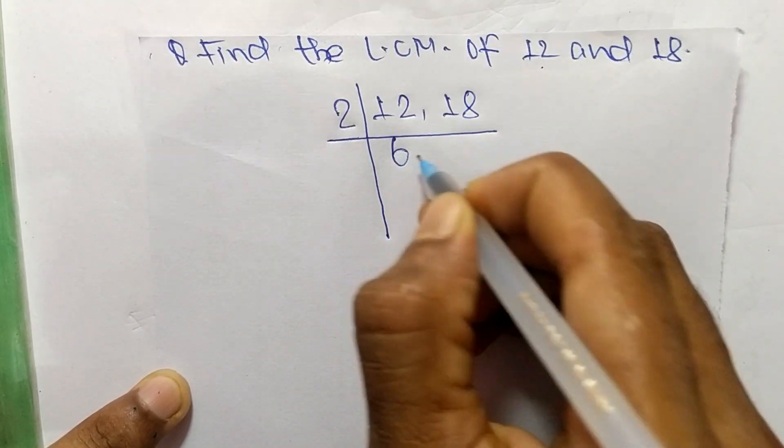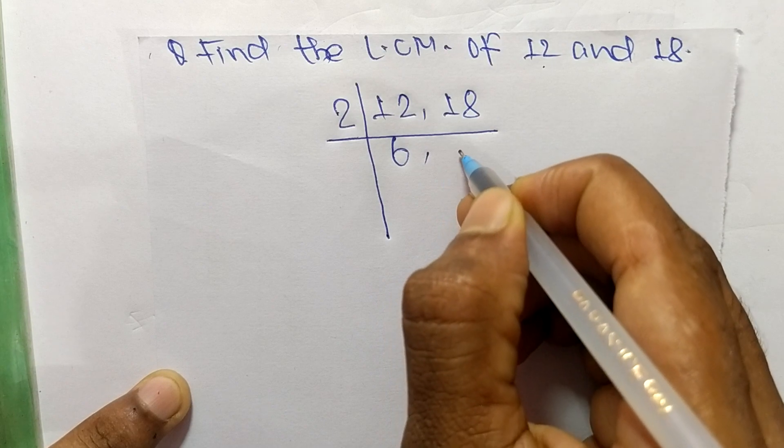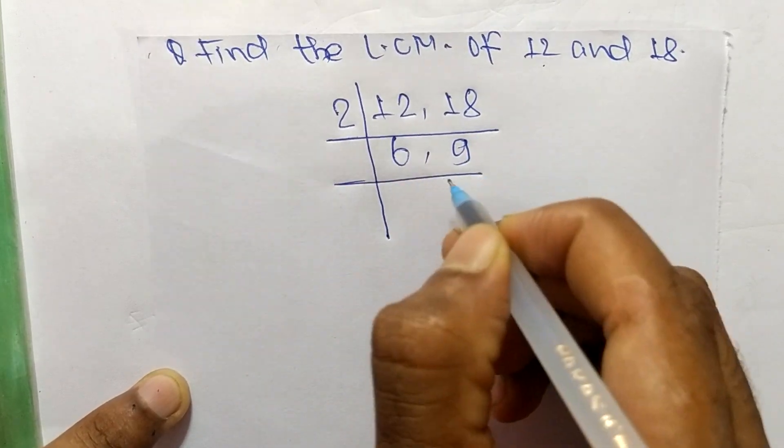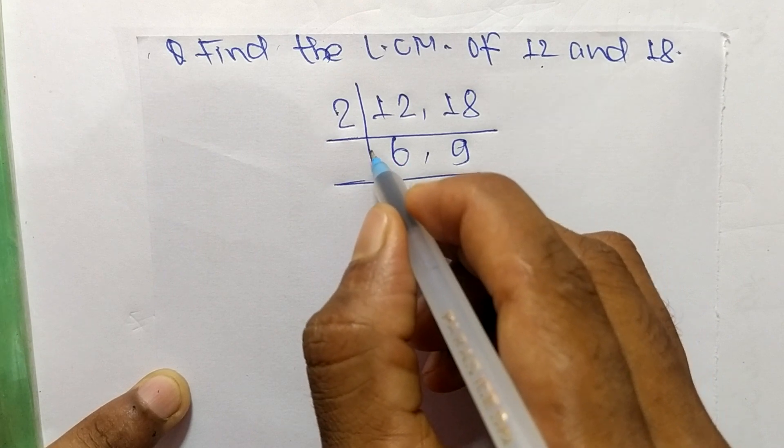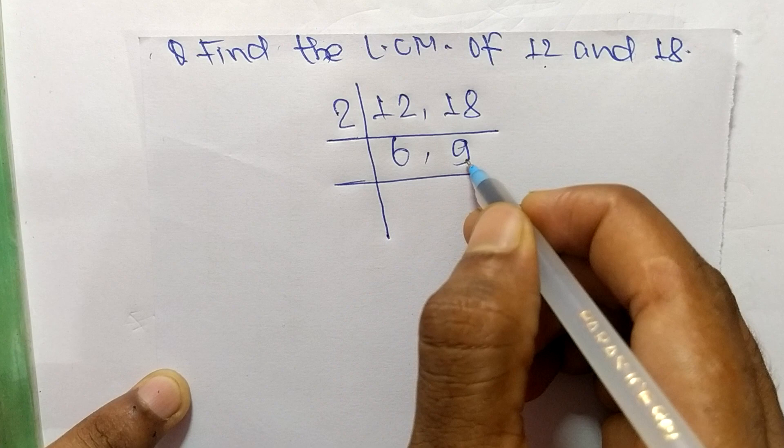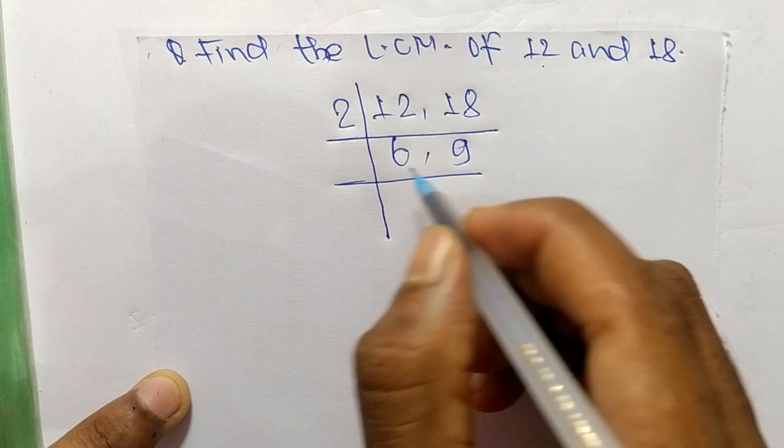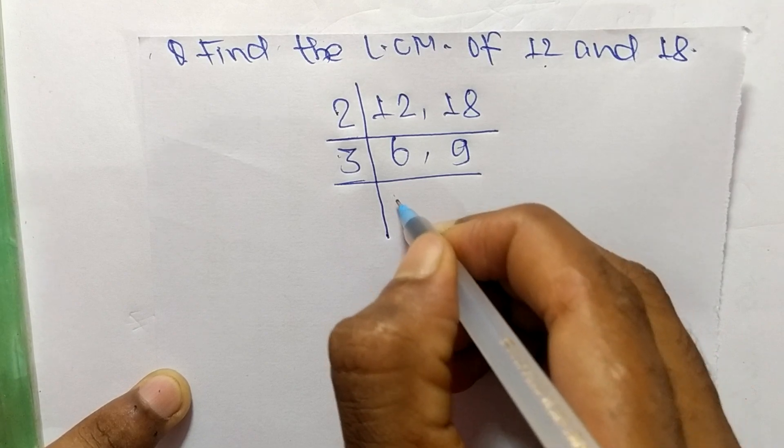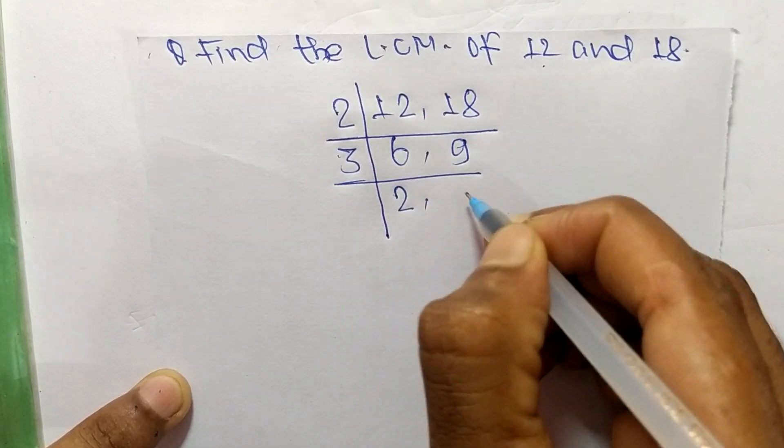2 times 6 means 12 and 2 times 9 means 18. So now 2 can exactly divide 6 but can't divide 9, so take the number greater than 2 which is 3. So 3 times 2 means 6 and 3 times 3 means 9.